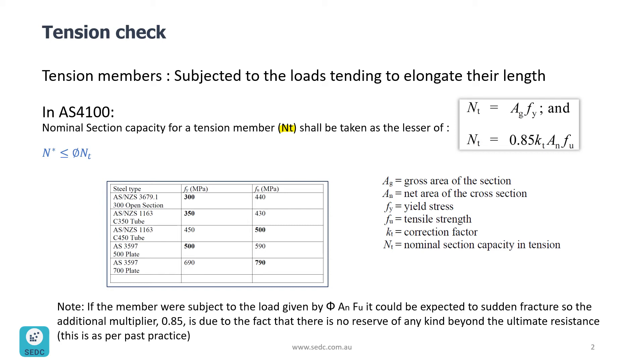The first one: NT = AG·FY. AG is gross area of the section and FY is yield stress.